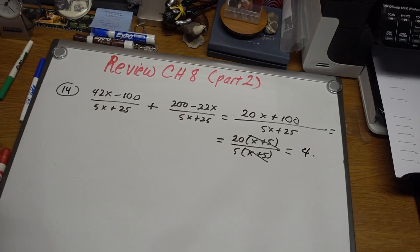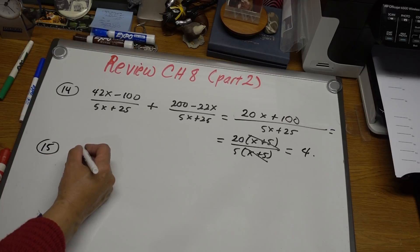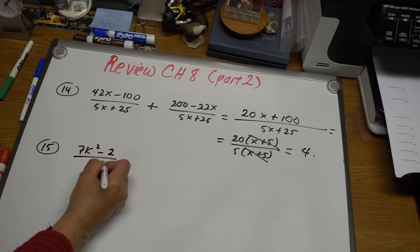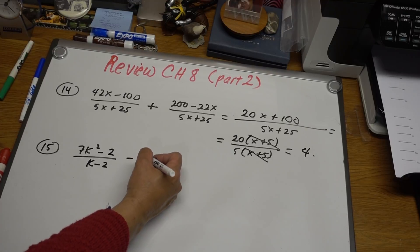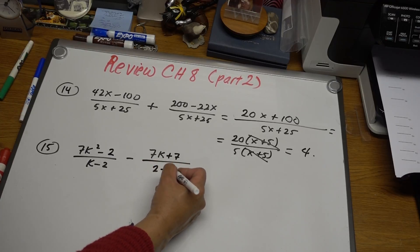For number 15, we have another subtraction: 7k squared minus 2 over k minus 2, minus 7k plus 7 over 2 minus k.